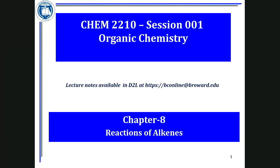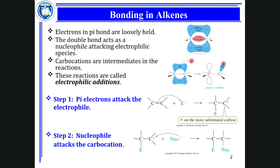Chapter 8: Reactions of alkenes. We've talked about elements of unsaturation, naming, hybridization for alkenes, and how to prepare alkenes. Now, if you have an alkene, what type of reactions can you do? Starting with alkene as the reactant, what other functional groups can you prepare? What compounds with other functional groups can you make?